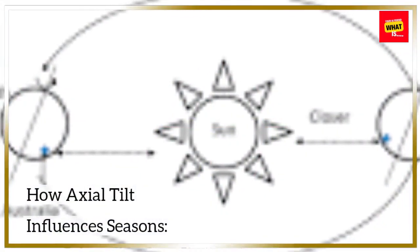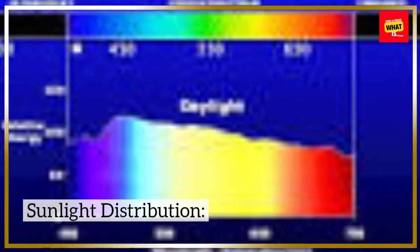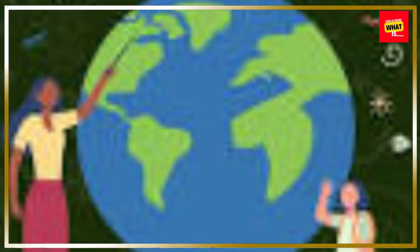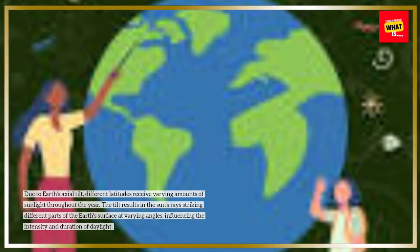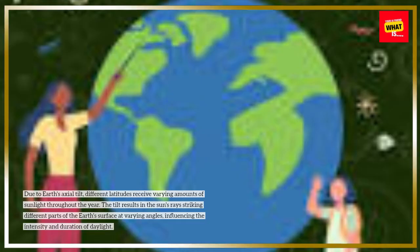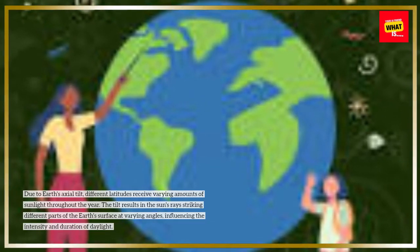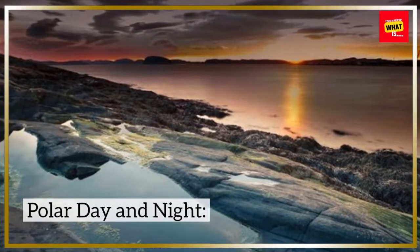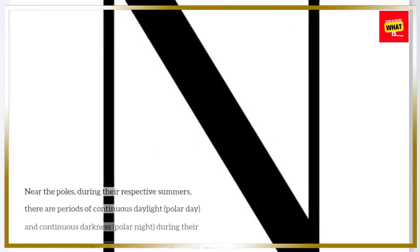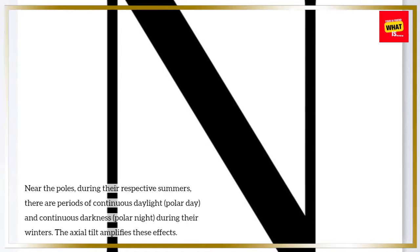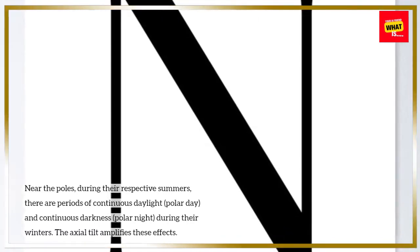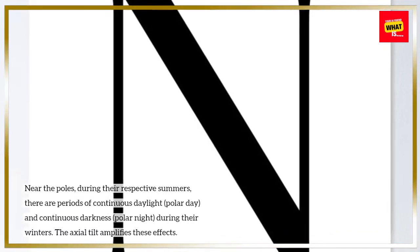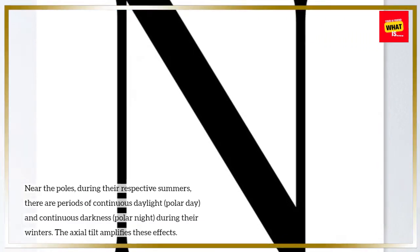How Axial Tilt Influences Seasons — Sunlight Distribution. Due to Earth's axial tilt, different latitudes receive varying amounts of sunlight throughout the year. The tilt results in the sun's rays striking different parts of the Earth's surface at varying angles, influencing the intensity and duration of daylight. Near the poles, during their respective summers, there are periods of continuous daylight, polar day, and continuous darkness, polar night, during their winters. The axial tilt amplifies these effects.